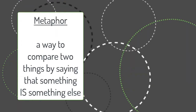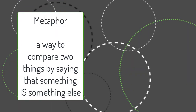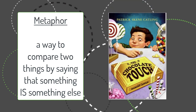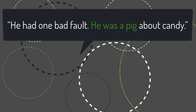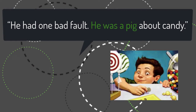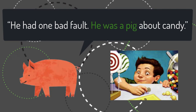A metaphor is a way to compare two things by saying that something is something else. It does not use the words like or as like a simile does. An example of this comes from The Chocolate Touch. When describing John Midas in the first chapter, the author says, 'He had one bad fault. He was a pig about candy.' This is considered a metaphor because the author is comparing John to a pig by saying that he is a pig — he isn't saying he is an actual pig, but that he eats a lot, like a pig would, especially with candy.